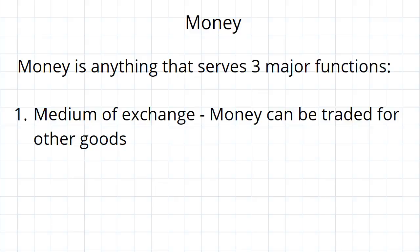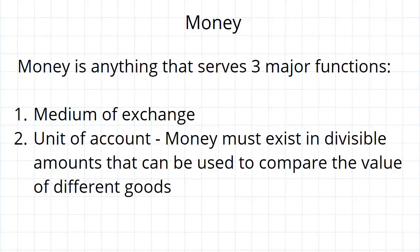The second function of money is that it also serves as a unit of account. In other words, money can be used as a form of measurement of the value of things. It must exist in divisible amounts and you've got to be able to use that to compare the value of different goods.